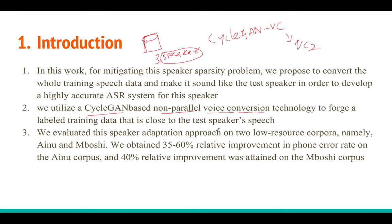Non-parallel voice conversion means you can convert audio files that are not parallel — for example, converting Obama's voice to Donald Trump's voice without needing audio files of both speaking the same content. In this paper, CycleGAN is used to generate synthetic training data that has unknown speaker characteristics. So if your training data has speakers 1, 2, and 3, you can generate audio resembling a new speaker 4.